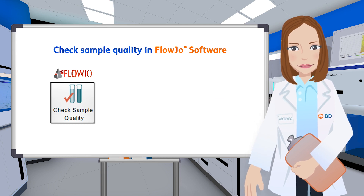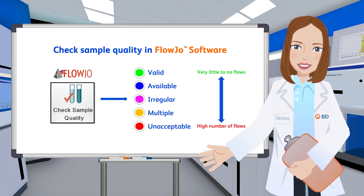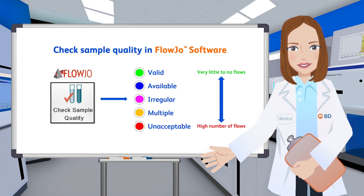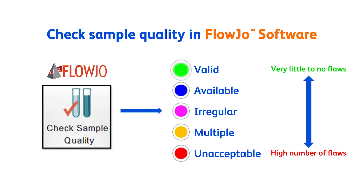Parameters compromising sample quality could be identified based on signal stability. Using this information, the check sample quality function will assign one of five badge colors to each of your samples. These colors denote the number of flaws, or variations from the median, found across all the parameters in your experiment. Green indicates a very smooth acquisition with little to no flaws detected. Blue indicates a low number of flaws, while magenta, yellow, and red reflect increasing numbers of flaws and thus lower sample quality.